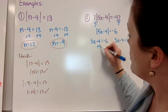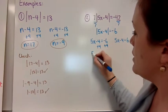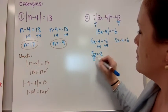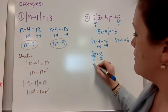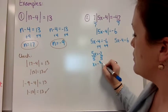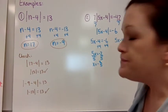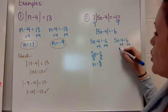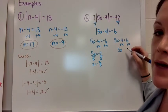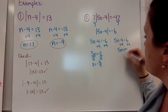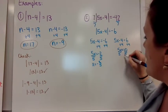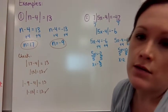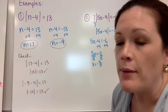Now we solve for x. Add four to both sides: five x equals negative two, so x equals negative two fifths. Over on the other side, add four: five x equals 10, divide by five, so x equals two. It's easy to just circle those and move on, but you do want to check your solutions and make sure they make good sense.